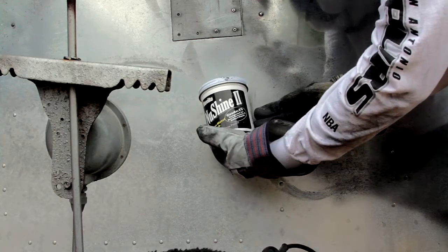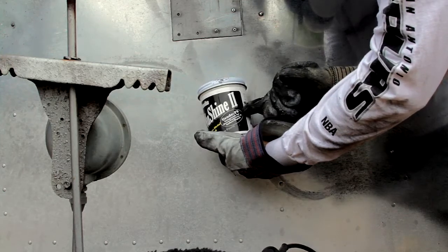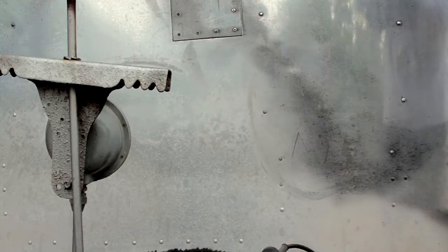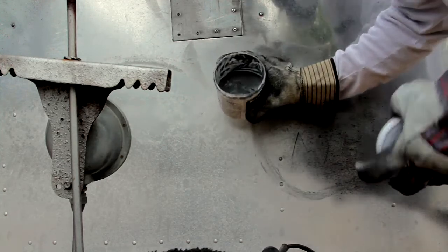First I get this stuff called Nuvite. I'm using Grade F9. You can get it from Vintage Trailer Supply or PerfectPolish.com. It doesn't matter who you get it from, but I recommend you get a pound of it or more.